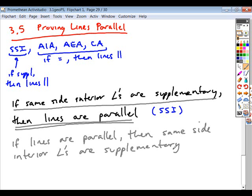What if we said if lines are parallel, then same side interior angles are supplementary. And this statement is called a converse. A converse just means that you switch the if and then parts, the hypothesis and conclusion.